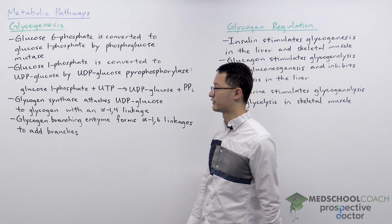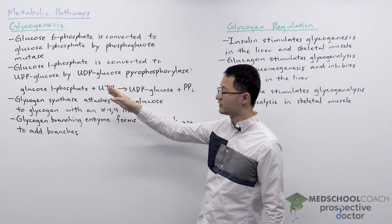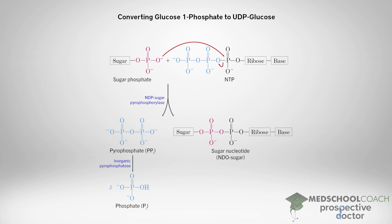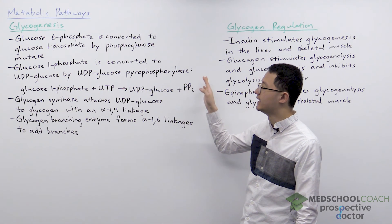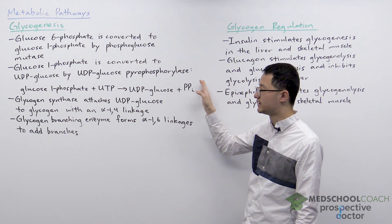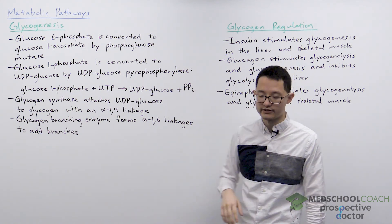Next, as you can see in this diagram, glucose 1-phosphate is reacted with UTP to produce UDP glucose and pyrophosphate. The pyrophosphate is further broken down into two separate phosphate molecules to release even more energy. This reaction is catalyzed by UDP glucose pyrophosphorylase.